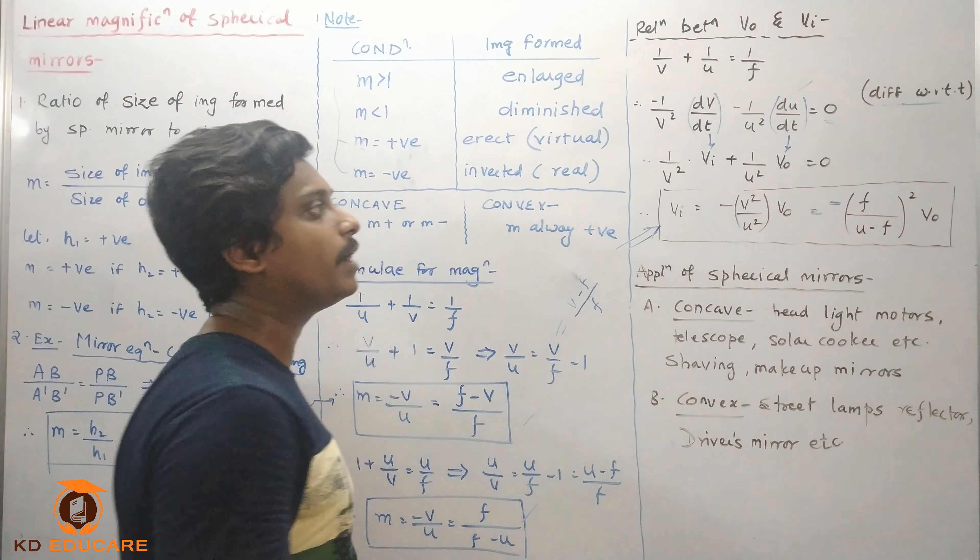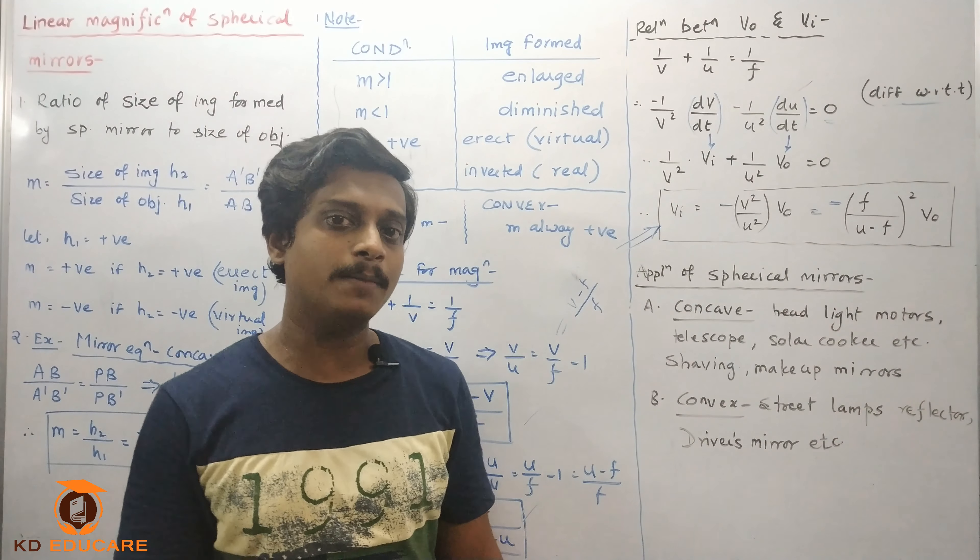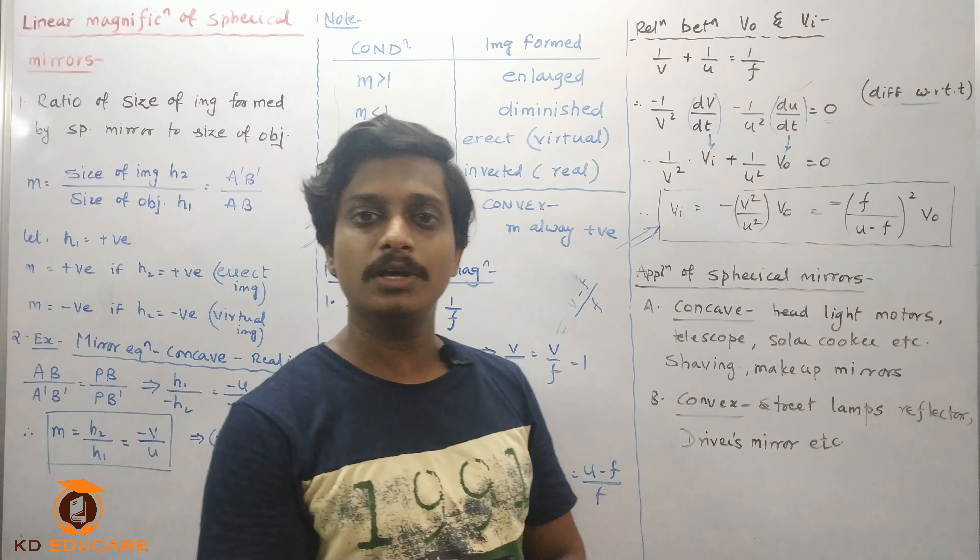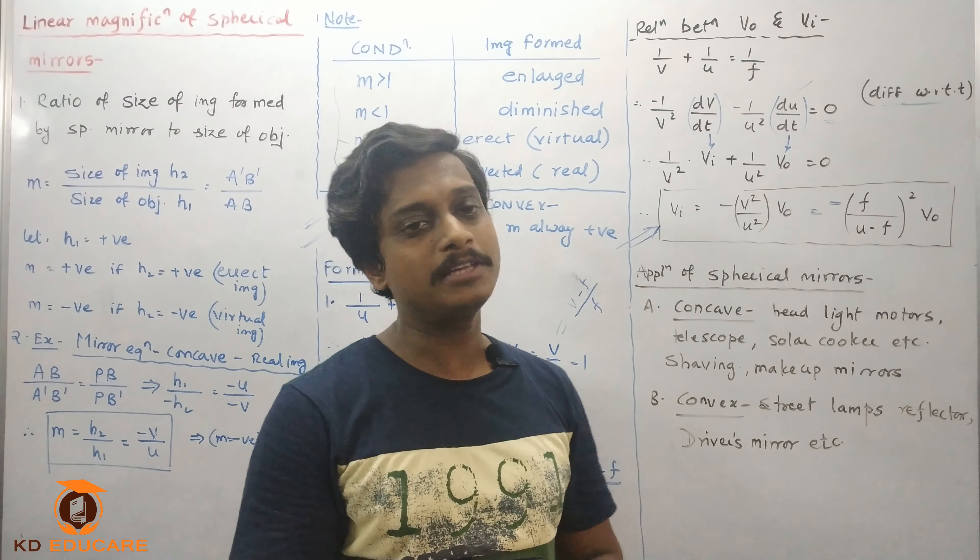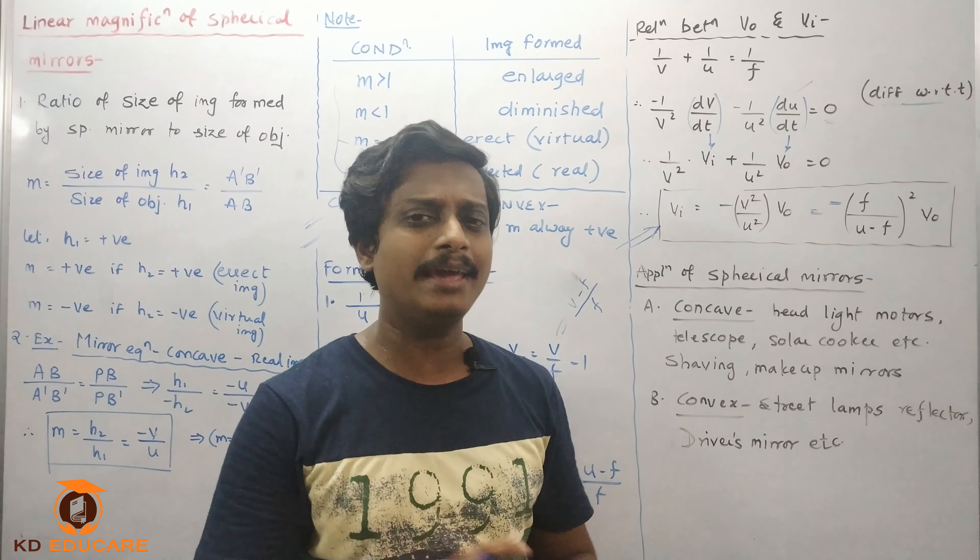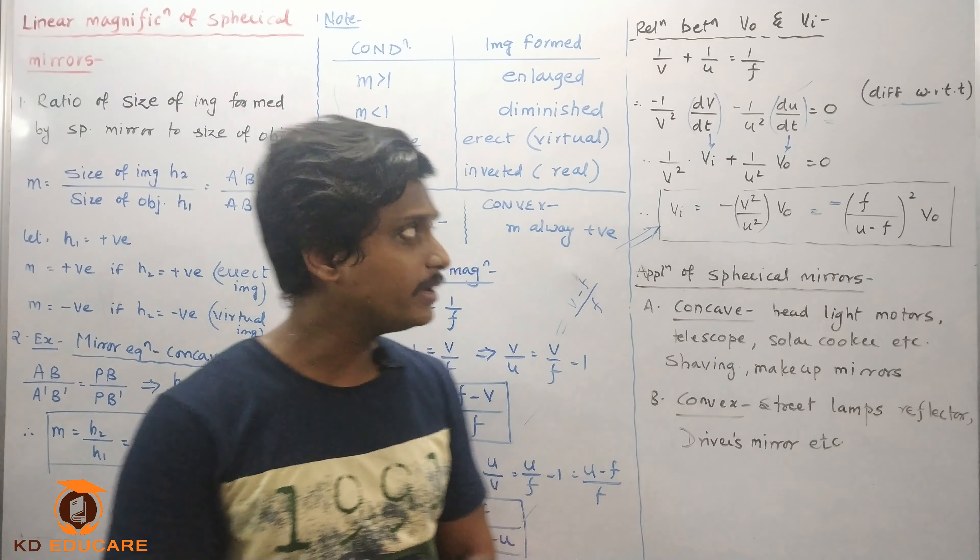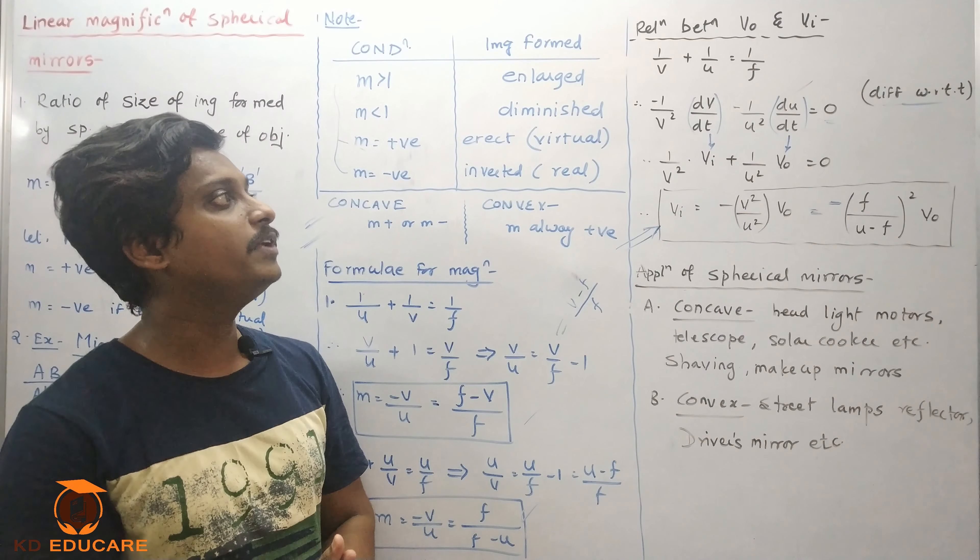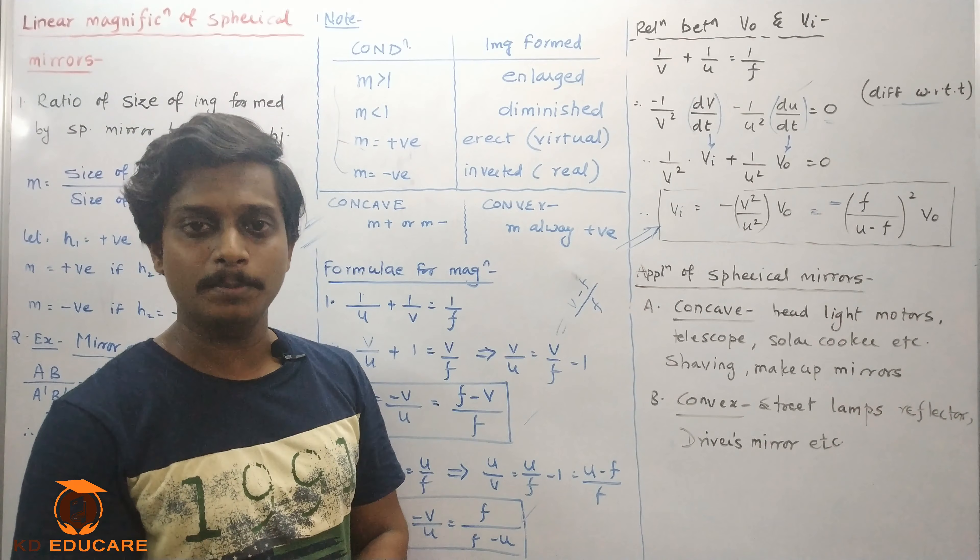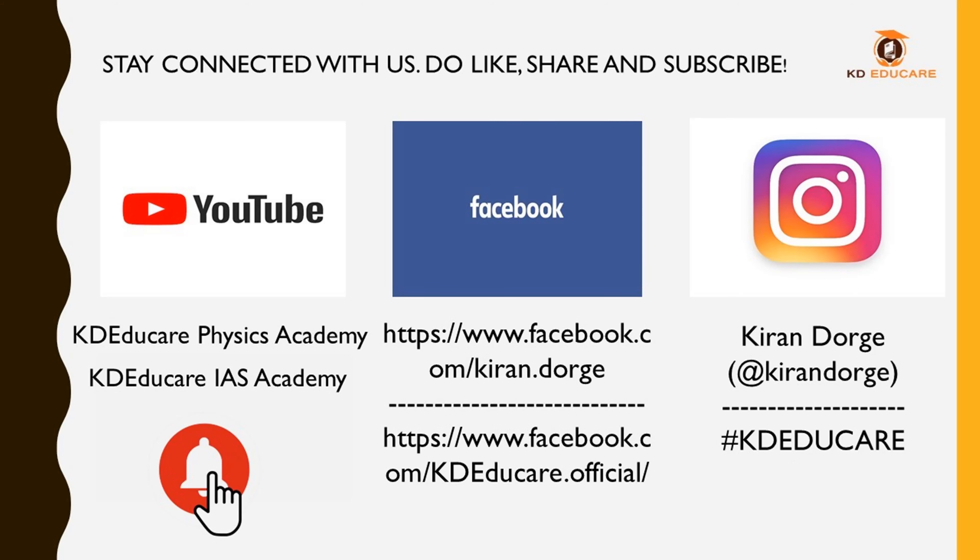So you have to differentiate with respect to time. So 1 upon v square vi, this is called velocity of image. du upon dt is your velocity of object. So 1 upon v square vi plus 1 upon u square v0 equal to 0. So the value of vi, we'll rearrange this. This will go down here and this v square will go down here. So minus v square upon u square v0.